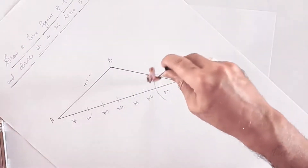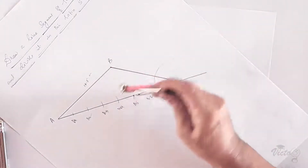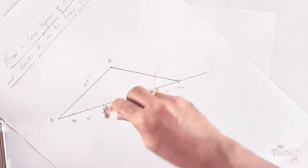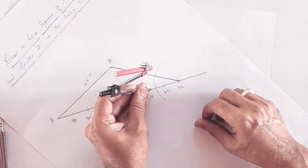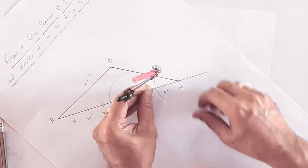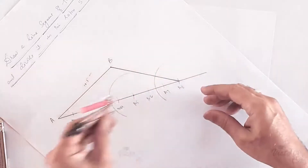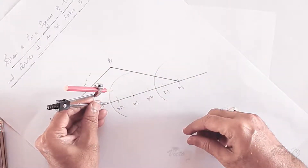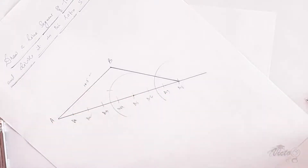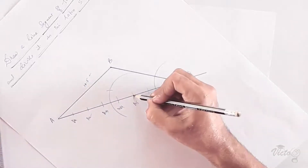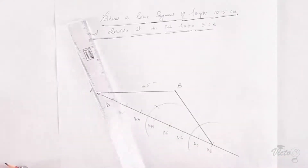With a8 as center, draw an arc of any radius. Without changing that radius, draw another arc with center at a5. Measure the arc length inside the angle, and cut that same length in the second arc. Then join a5 and the point of intersection of the two arcs.